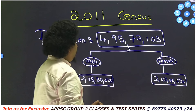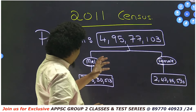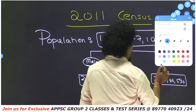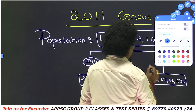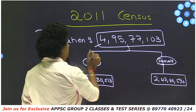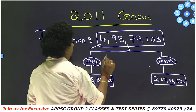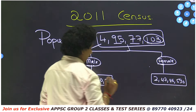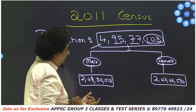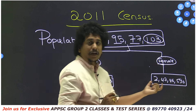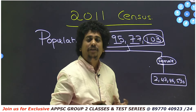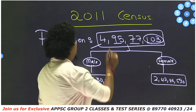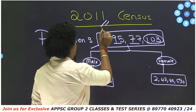If you are interested in this class, the total population figure is 4,95,77,103. This is based on the 2011 census.